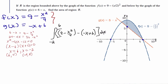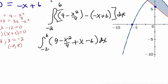Now we have a subtraction between those two functions. So let's go ahead and distribute that. So we get 9 minus x squared over 4 plus x minus 6. Combine any like terms. The only like terms there I see is the 9 and the negative 6. 9 minus 6 is 3.